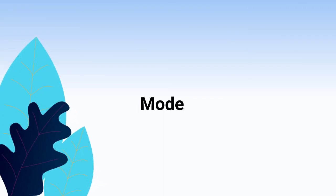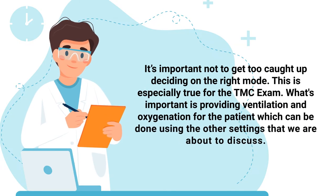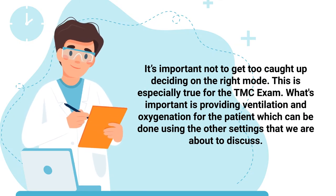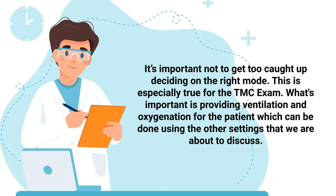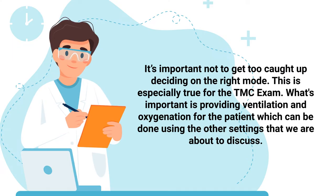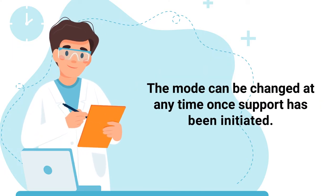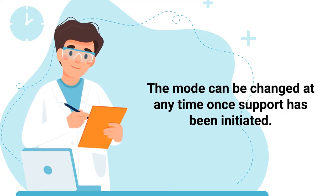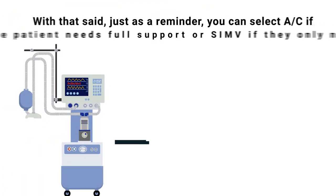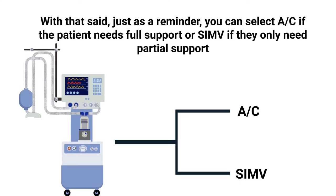First, you will need to select the mode. Any operational mode will work when setting up initial ventilator settings — it's important not to get too caught up on deciding the right mode, especially for the TMC exam. What's important is providing ventilation and oxygenation, which can be done using the other settings. The mode can be changed at any time once support has been initiated. As a reminder, you can select assist control for full support, or SIMV if the patient only needs partial support.